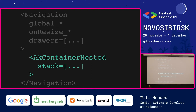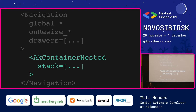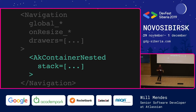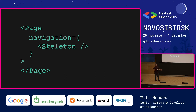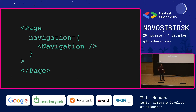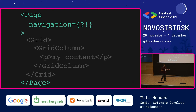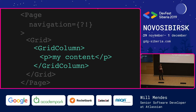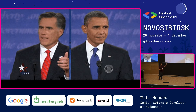Inside of this, you have one thing called AK container nested, which has a stack. What's a stack? I have no idea. It's a page — that's the white content. It has a navigation, which can be a skeleton or navigation. A page which has a proper navigation, which can have skeleton navigation. Inside of this, you have the grid — proportions for your content, buttons, pages, cards, and so on. And you have grid colors, which is the page. You do all that code to have your page here. It makes all the sense.